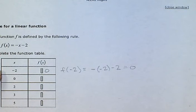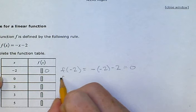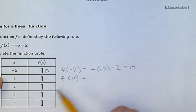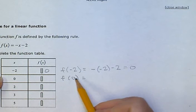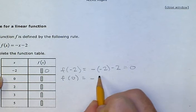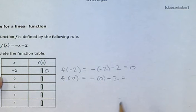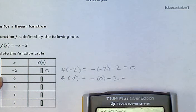So now we're doing the next row, f of 0 equals. When I have a 0, I'm putting it in for x. That means I have minus, or negative 0, minus 2. So I can type that into my calculator as well.